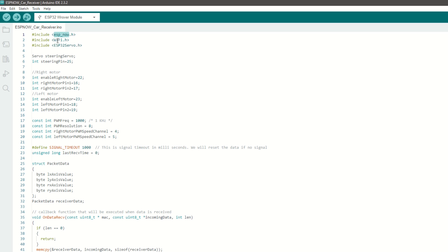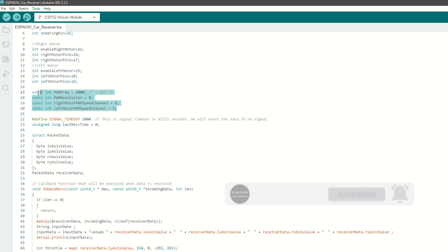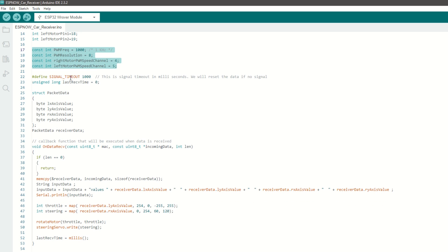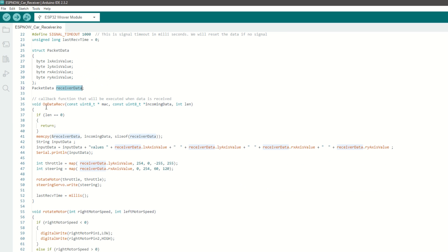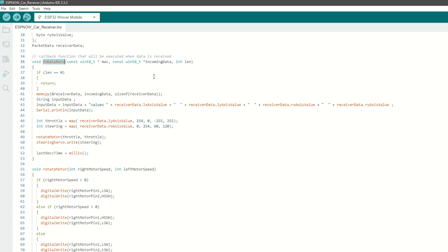Now we need to include the ESPnow and Wi-Fi library. Also we need to include ESP32 servo library. We have created object for servo. We have assigned the right and left motor pins. We have set the PWM frequency resolution and channel for speed. We have set the signal timeout as 1 second. We have created packet data structure to store the received values. We have on data receive callback function which will be called when ESP32 receives data.